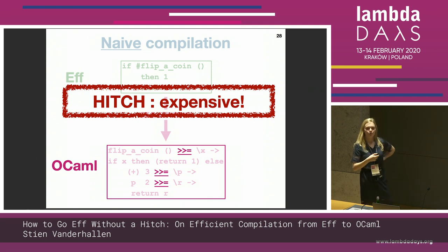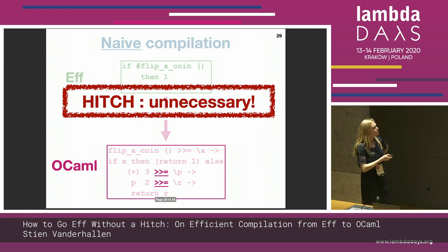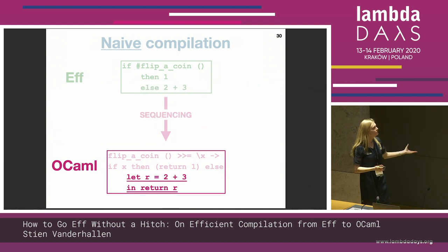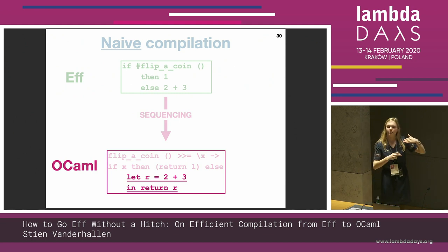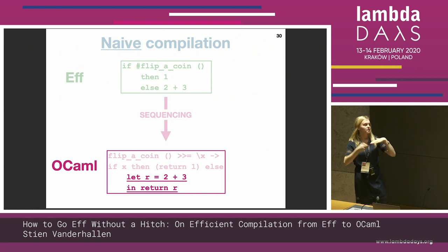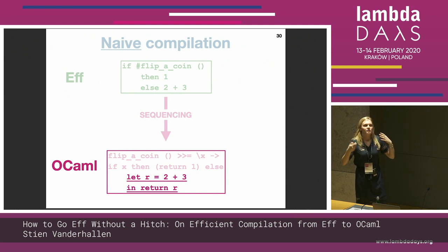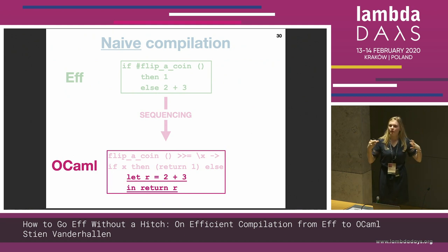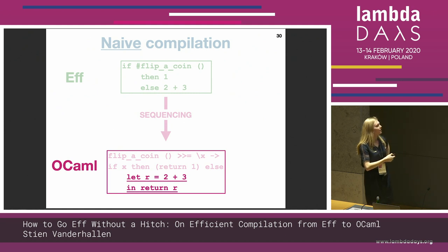So these two binds aren't even necessary. We can just replace them with let-in, which is way less performance intensive — we need less time to do a let-in than a monadic bind. So this is our goal: to do this compilation from F to OCaml with some knowledge about the effects that are thrown, such that we can be aware of this purity and use let-in instead of monadic binds.